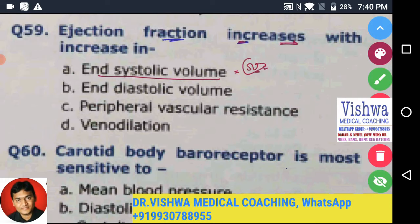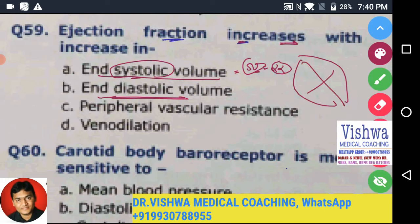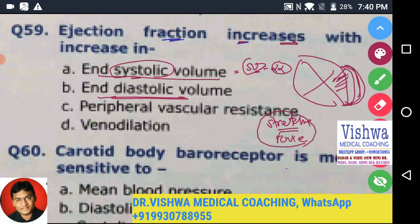End systolic volume is not proportional to ejection fraction. Think about end diastolic volume — the more blood remains at the end of diastole, the more the ventricle gets stretched. Remember there is a principle in cardiology: the Frank-Starling mechanism. The more the cardiac muscle fibers are stretched, the more is the force of contraction.